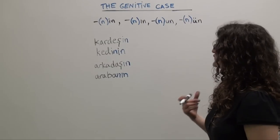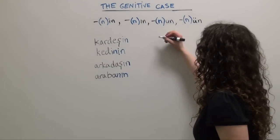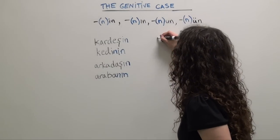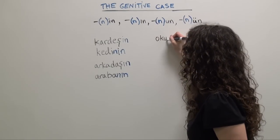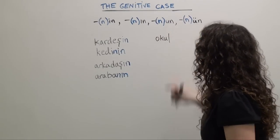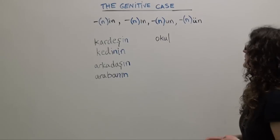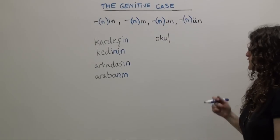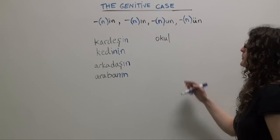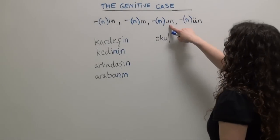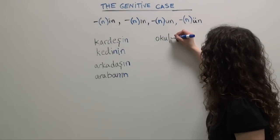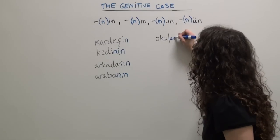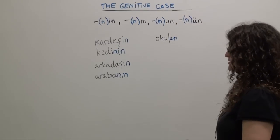Let's say we want to say 'of the school.' The Turkish word for school is okul. According to the rules of four-way vowel harmony, we're going to choose 'un' as our genitive case ending, giving us okulun — 'of the school.'